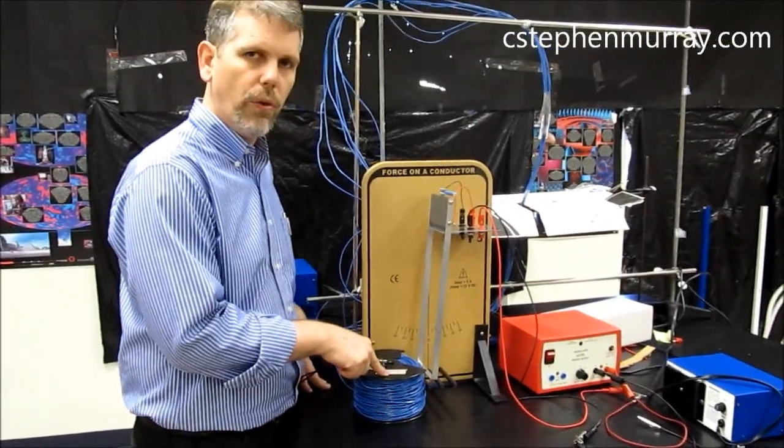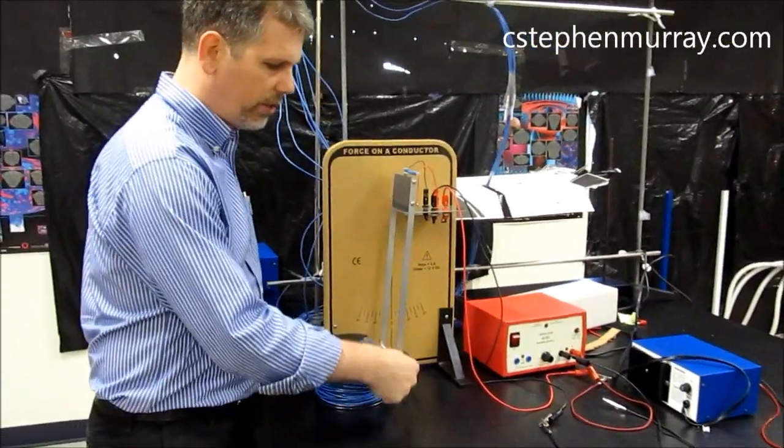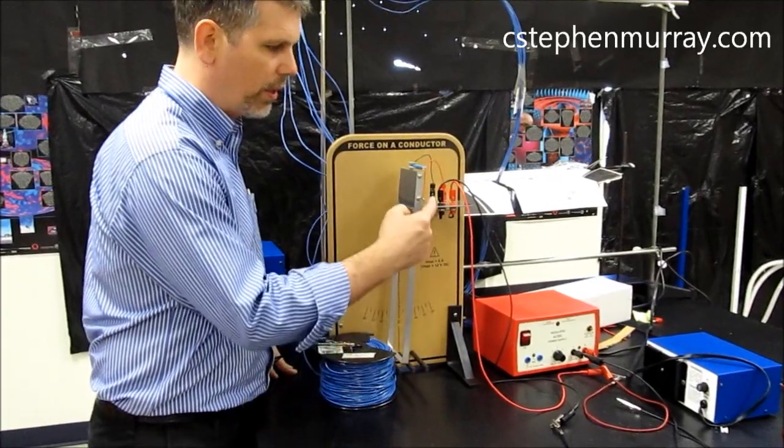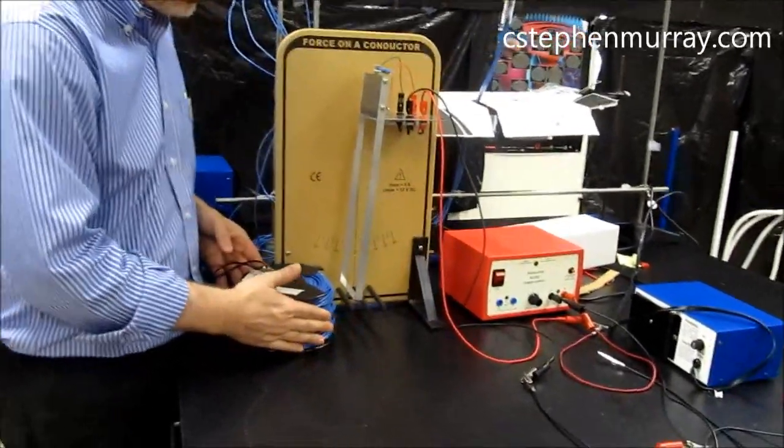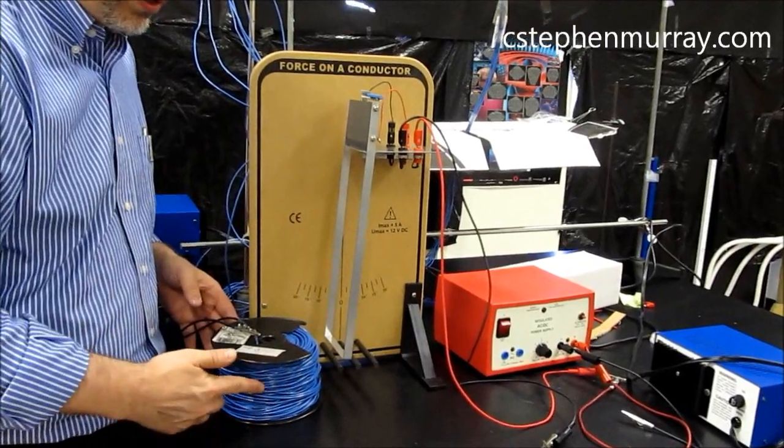We're going to use this apparatus to show the force on a wire. The current here is flowing that direction, just as before, because this is red and this is black. And I know that this large spool of wire here has the current flowing this direction.